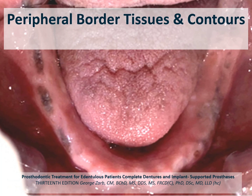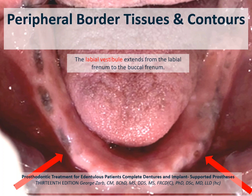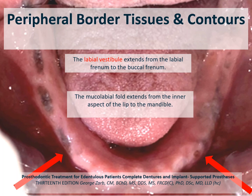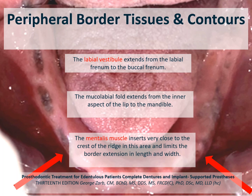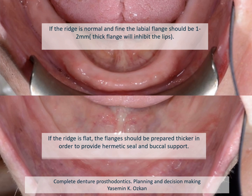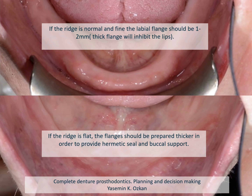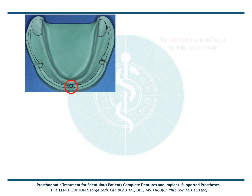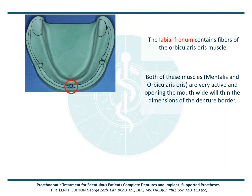The labial vestibule extends from the labial frenum to the buccal frenum. The mucolabial fold extends from the inner aspect of the lip to the mandible. The mentalis muscle inserts very close to the crest of the ridge in this area and limits the border extension in length and width. If the ridge is normal, the labial flange should be 1–2 mm thick, as a thicker flange will inhibit lip movement. But if the ridge is flat, the flanges should be prepared thicker to provide a hermetic seal and buccal support. The labial frenum contains fibers of the orbicularis oris muscle. Both mentalis and orbicularis oris are very active and opening the mouth wide will thin the dimensions of the denture border.